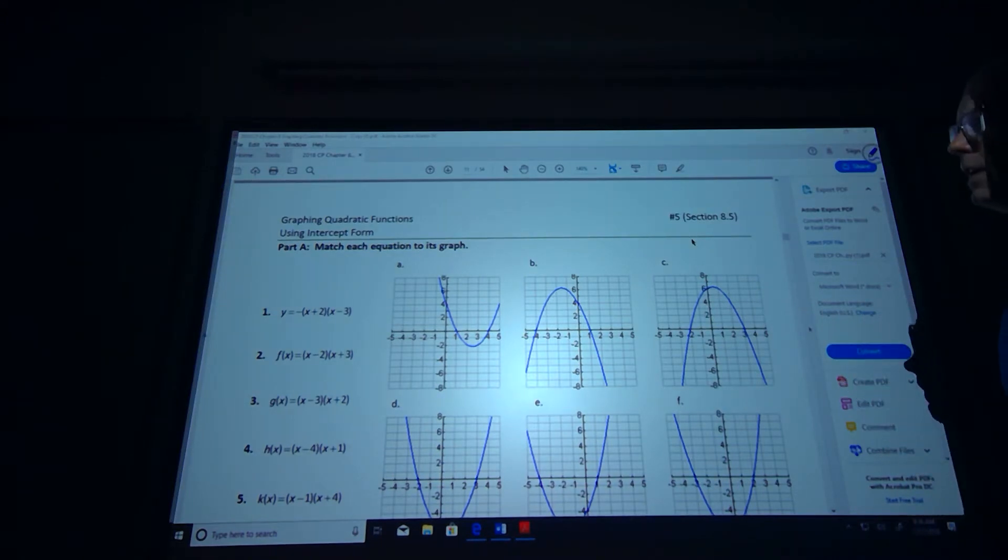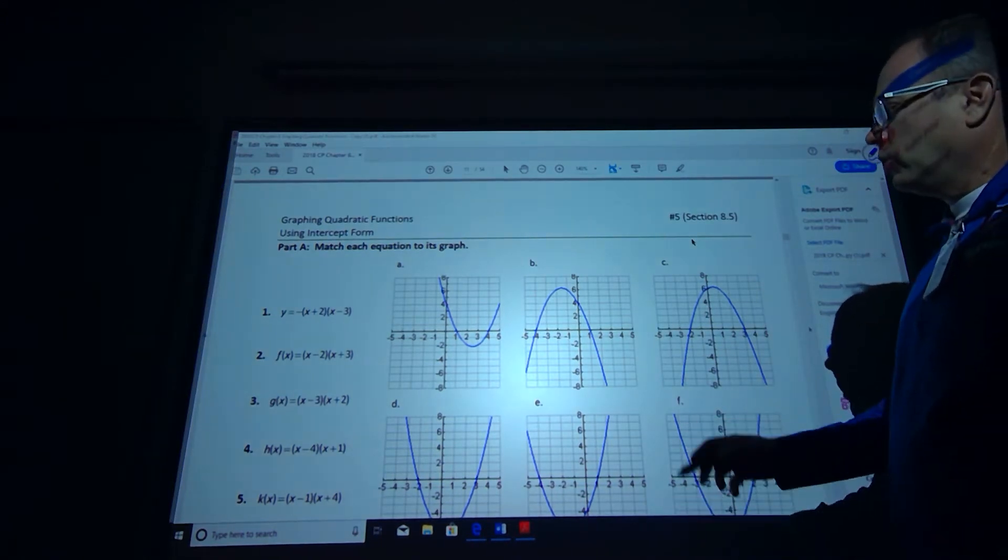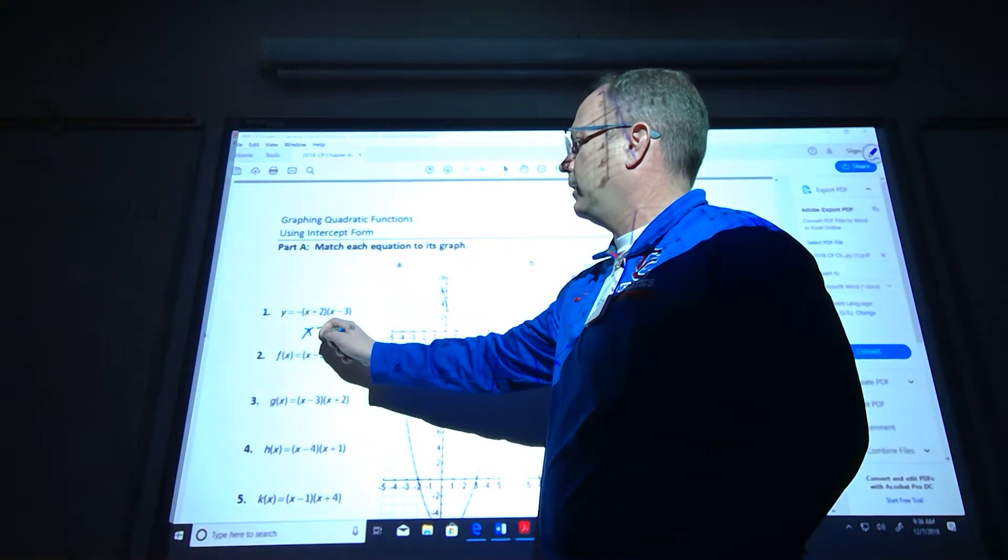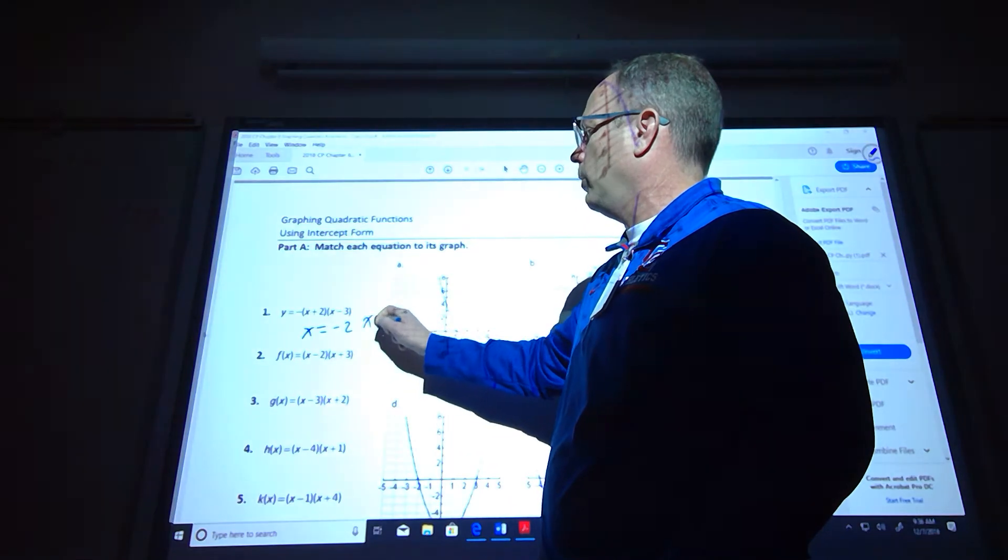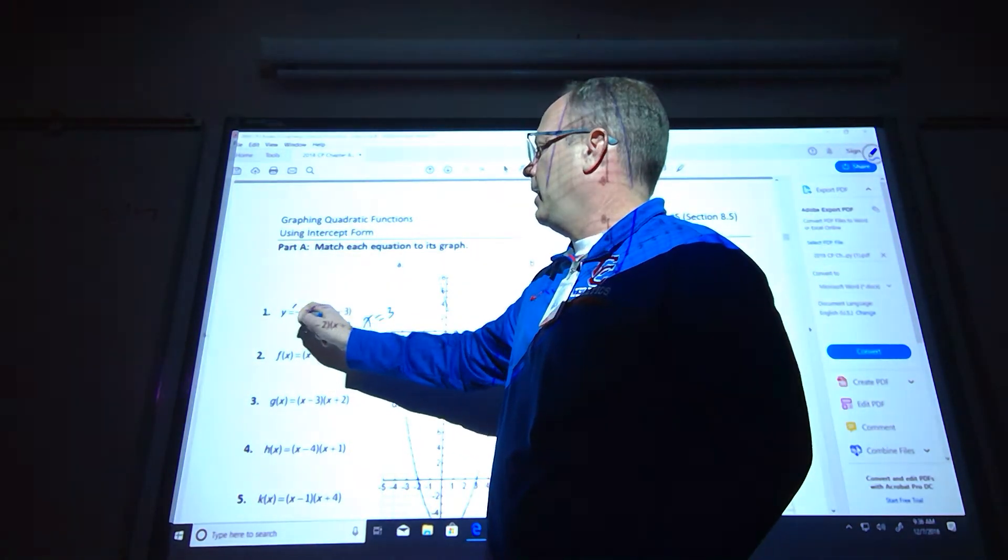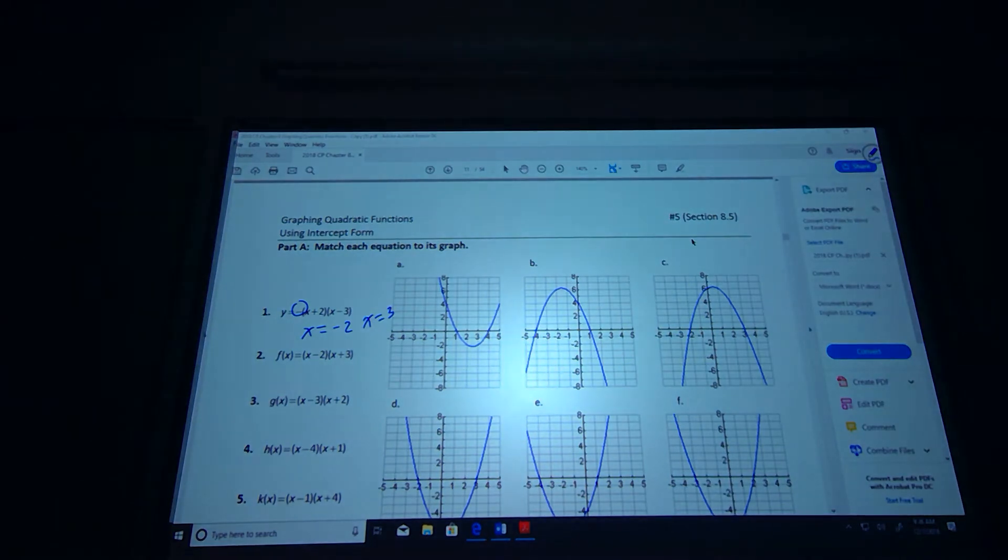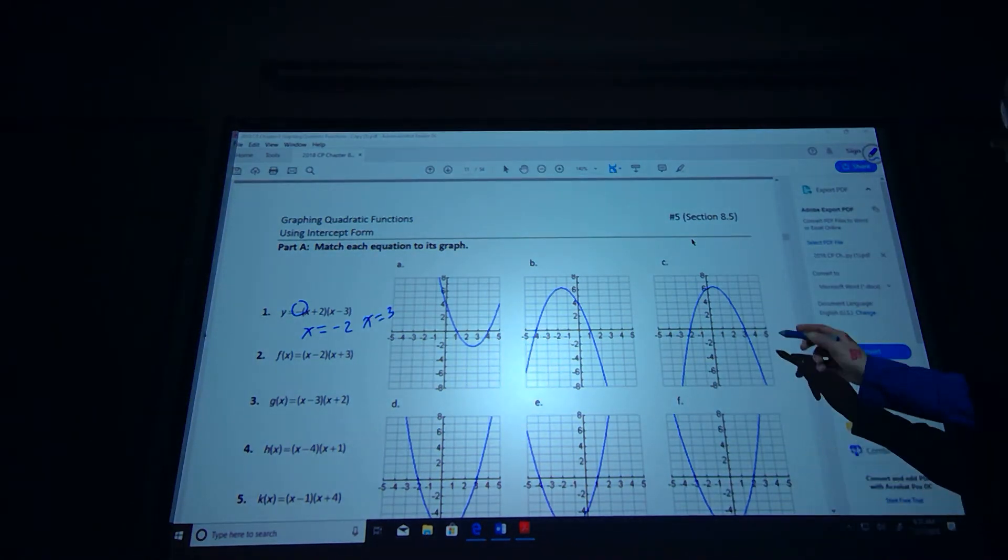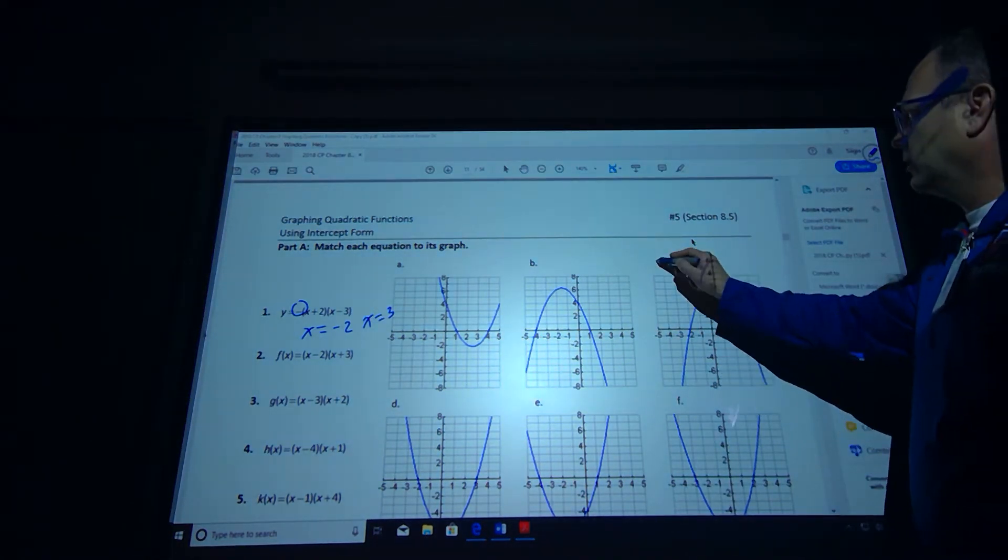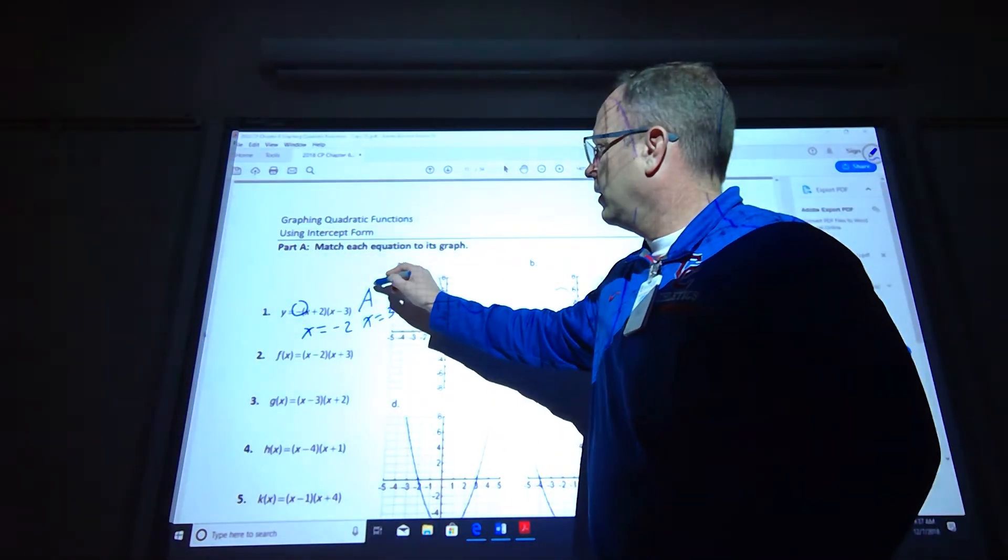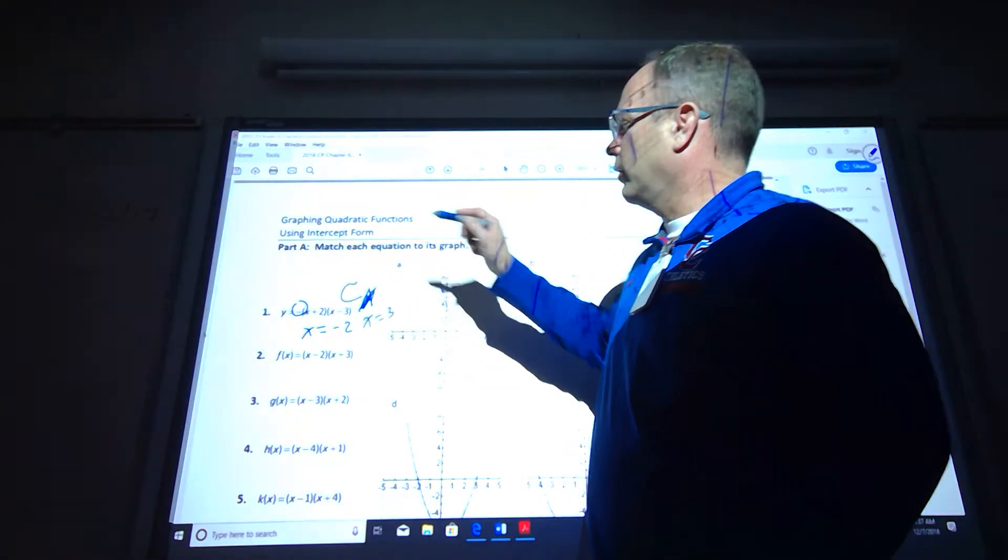We are to find which graph to match up to. This is going to cross the x-intercept at negative 2 and also at 3. The negative sign up front means it goes upside down, so we're looking for the one that crosses at negative 2 and 3 and is upside down. It looks like it's got to be C, so the answer to number 1 is the letter C.